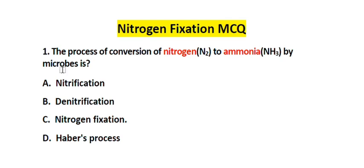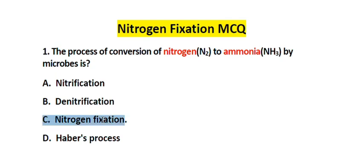Question number 1. The process of conversion of nitrogen to ammonia by a microbe is: Option A. Nitrification, Option B. Denitrification, Option C. Nitrogen fixation, Option D. Haber's process. The correct answer is Option C. Nitrogen fixation.